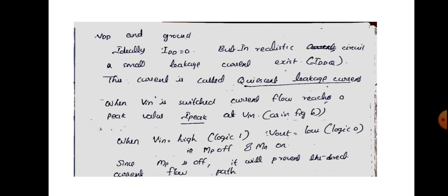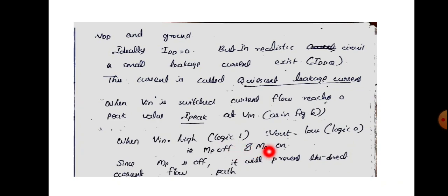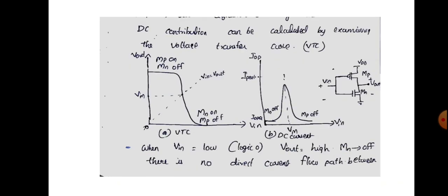When VIN is switched, current flow reaches a peak value I-peak at VM. When VIN is high — that is logic 1 — VOUT is low. Whenever VOUT is low, MP will be off and MN will be on. Since MP is off, it will prevent the direct current flow path from VDD to ground.